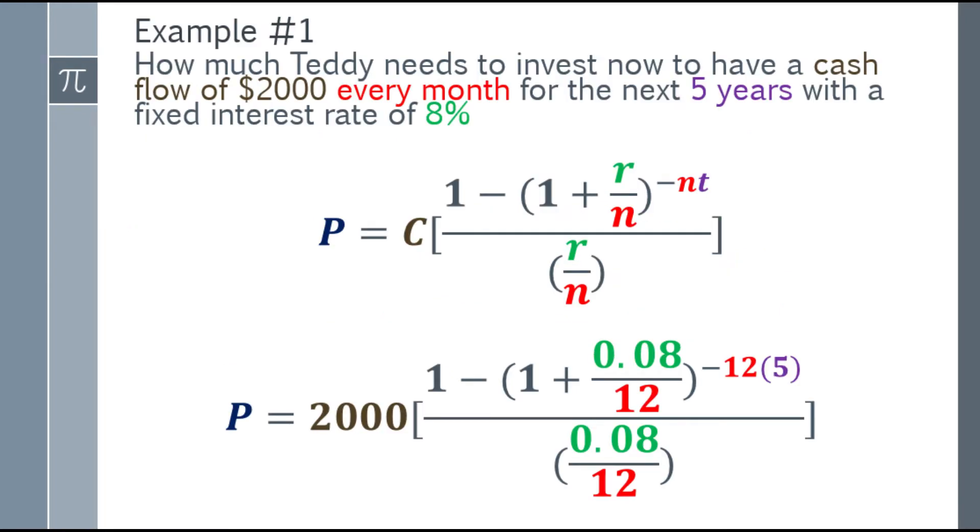So let's substitute the values. Present value equals $2,000 times the quantity. In the numerator, we have 1 minus, parentheses, 1 plus 0.08 over 12. The 0.08 comes from 8% converted to decimal. Every month means compounding monthly, so N is 12. The exponent is negative 12 times 5.